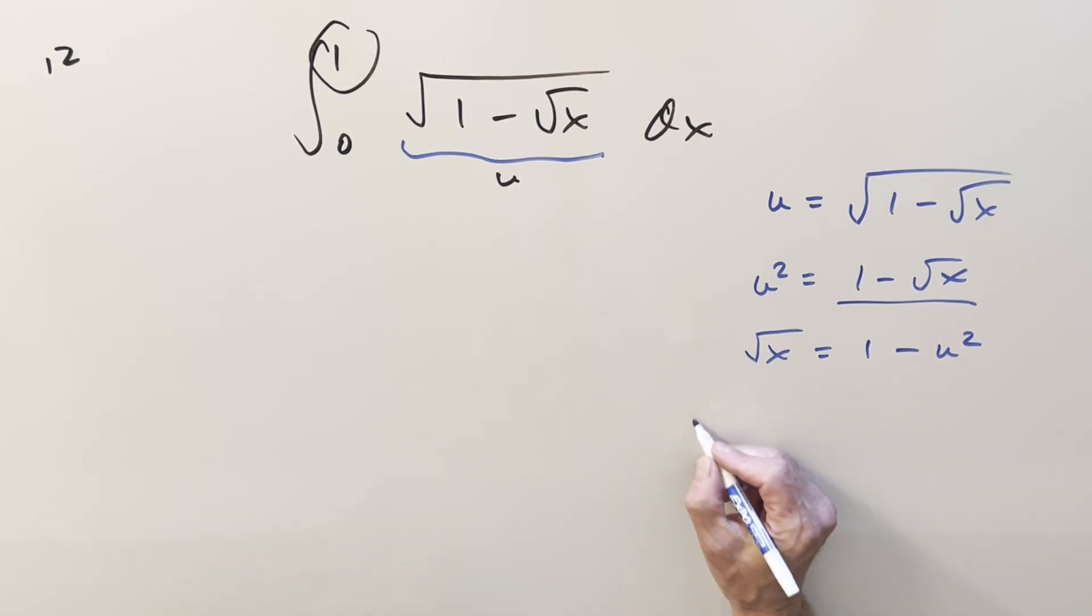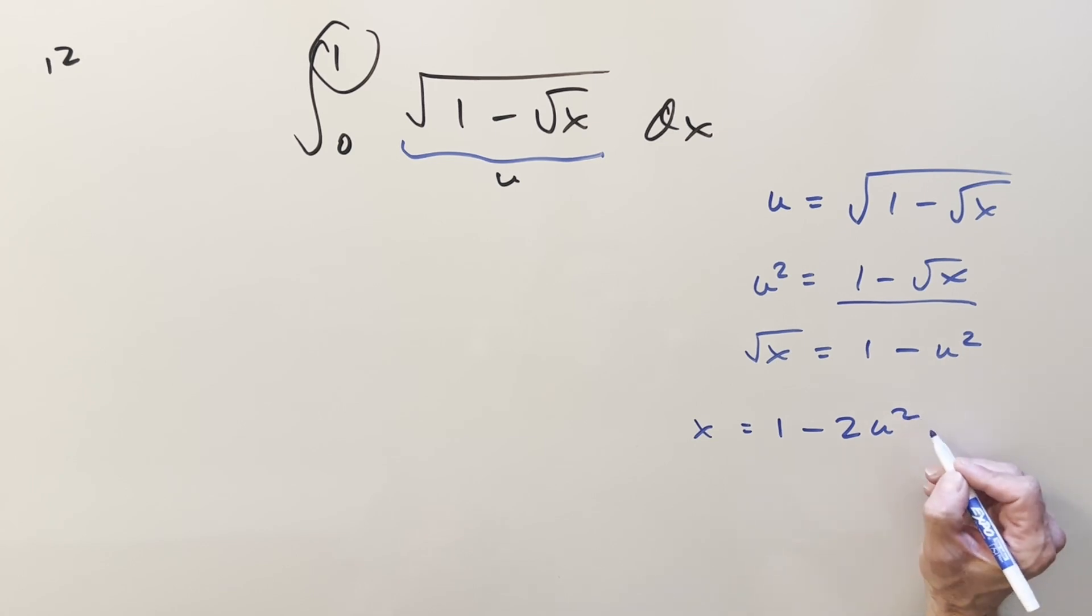Next, square both sides. We have x equal to 1 minus 2u squared plus u to the fourth. Go ahead, we get our x isolated. Take a derivative. We get dx is going to be equal to minus 4u plus 4u cubed du.